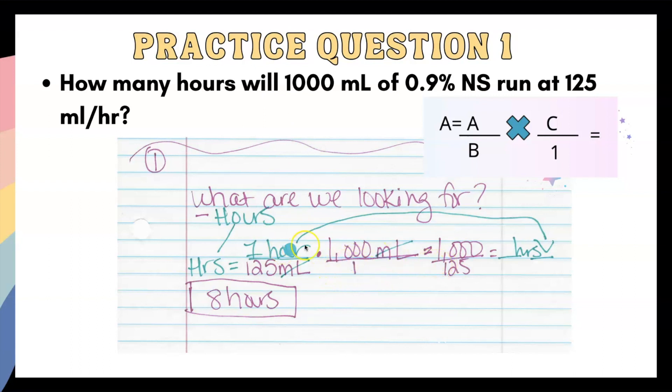And that's basically it. You multiply across. 1,000 divided by 125 is eight hours. So it's going to take eight hours to run. Now you don't have to use dimensional analysis, but I love dimensional analysis because you really just can't mess it up. The other recommendation that I have for you is to check your math at least twice. Sometimes you don't zero out your calculator correctly, and then you get some weird numbers. So just always double check your math.